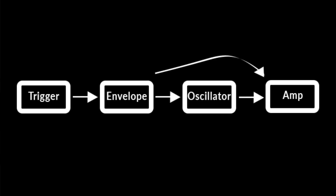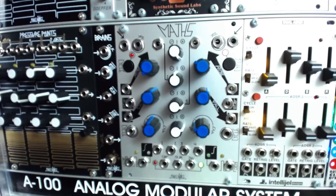In our previous example, we sent a gate or trigger into the scooper, routed to an envelope, which controlled the pitch and volume of our oscillator. This time we'll take the envelope out of the Roland virtual environment and use an external envelope to change the same parameters, leaving room for more virtual modules.